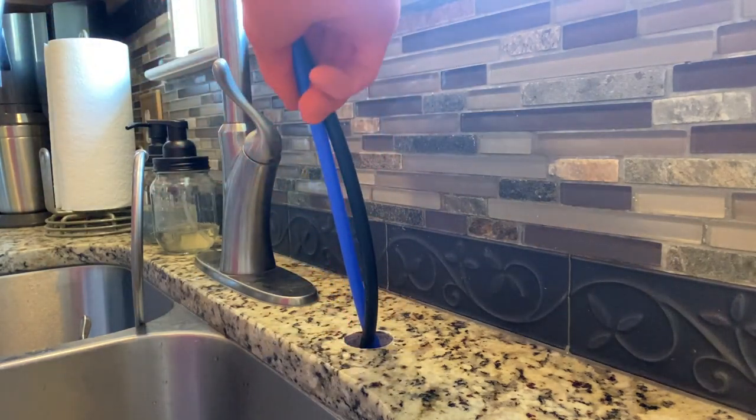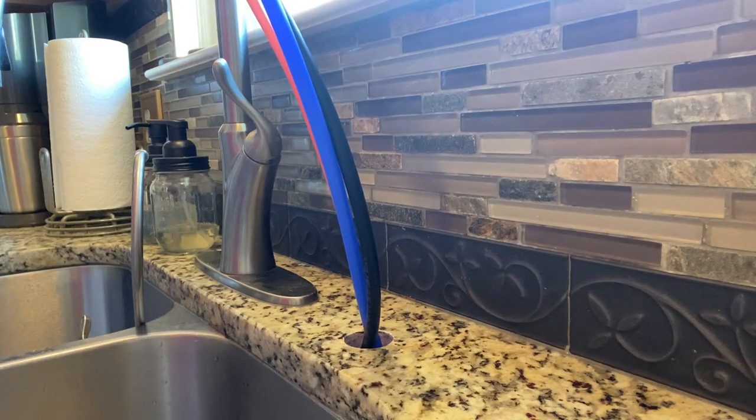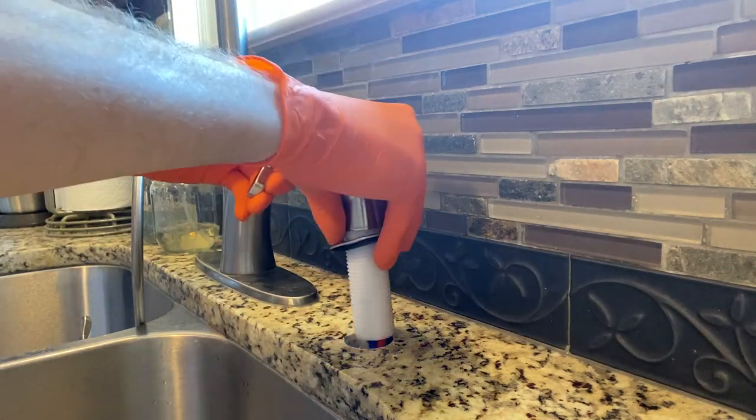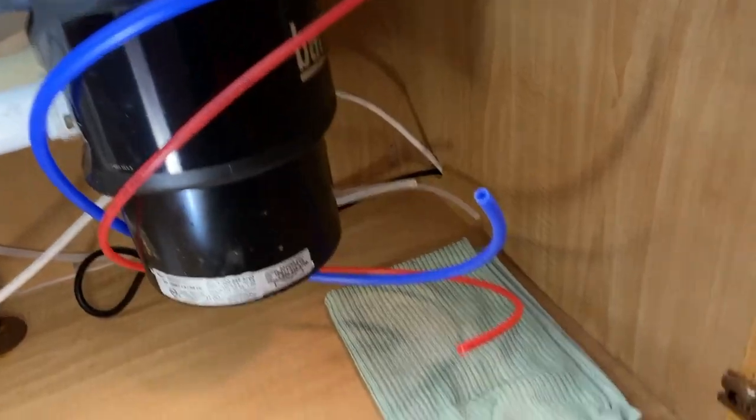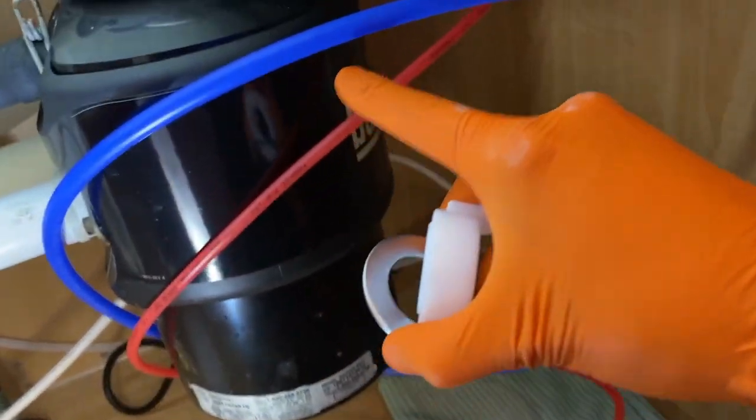Right now there is some tension, I'll go down below and reroute my lines. Back down below, you can see the red, blue, and the black drain hose right there.